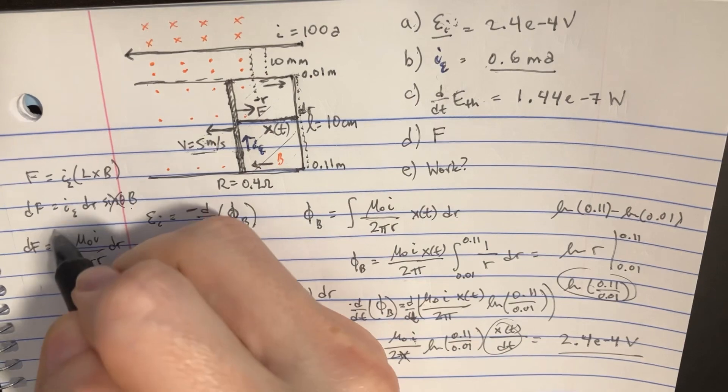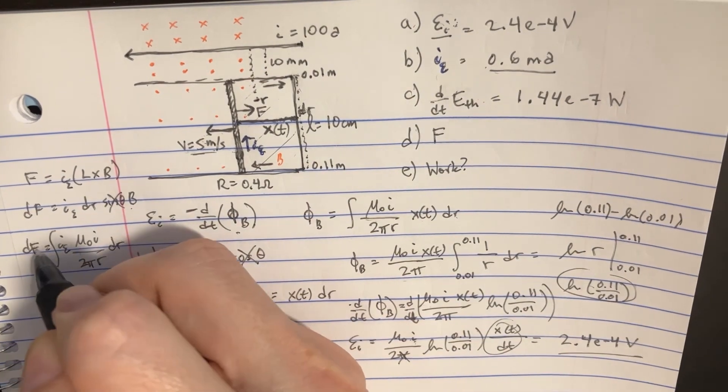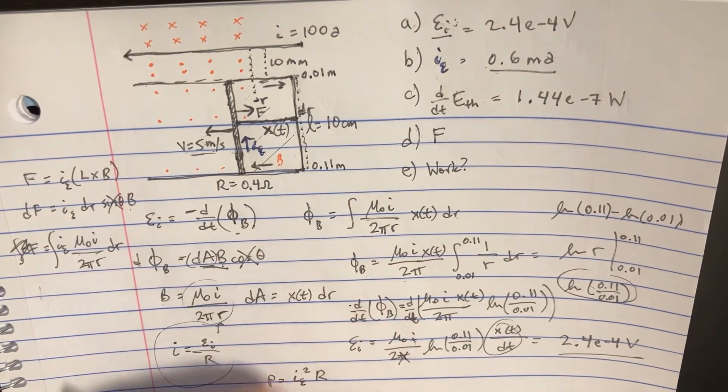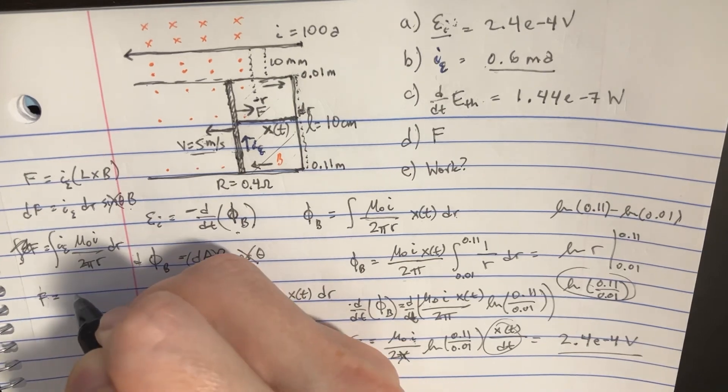At this point, we're actually integrating this, right? Integrating both sides, getting rid of the d on that side. So now you have the f equals the induced,